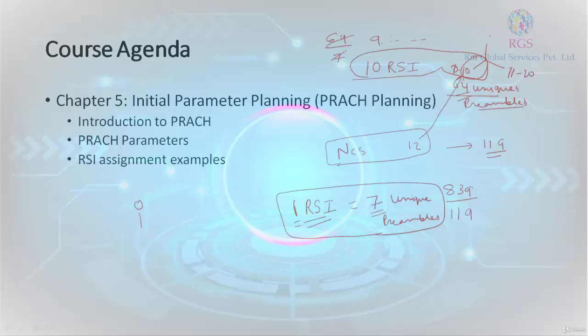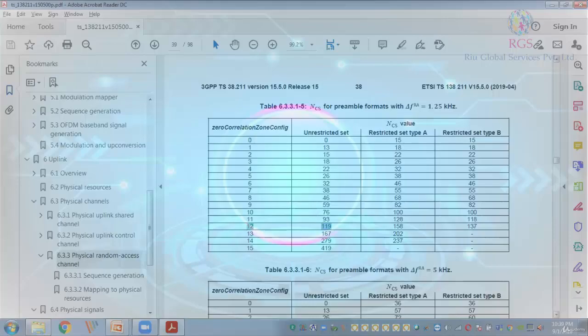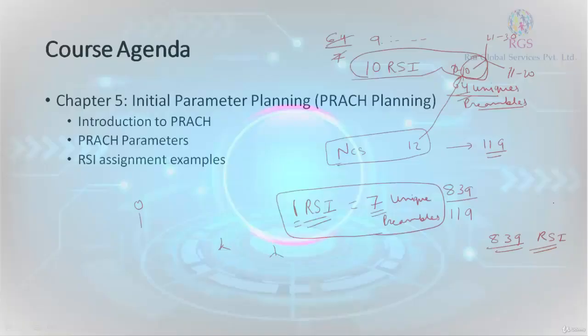11 to 20 for the next cell, 21 to 30 for another cell. I will keep repeating this planning. Once I run out of all 839 root sequence indexes, I am going to recreate them. This is similar to what you used to plan for basic planning or PCI planning — it is going to reuse after a certain amount of time. The same is the case with short preambles and long preambles.